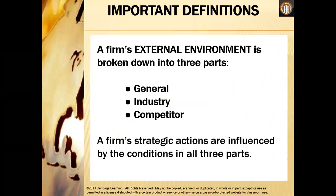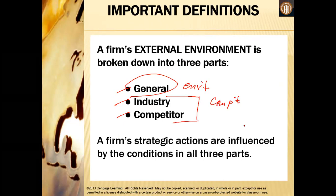A firm's external environment is broken down into three parts: the general environment, industry, and competitor. In some references, this is broken down into two — the general environment and the competitive environment, which is composed of your industry and your competitor. A firm's strategic actions are influenced by these conditions, meaning you have to take into consideration your general environment, your industry, and your competitor.